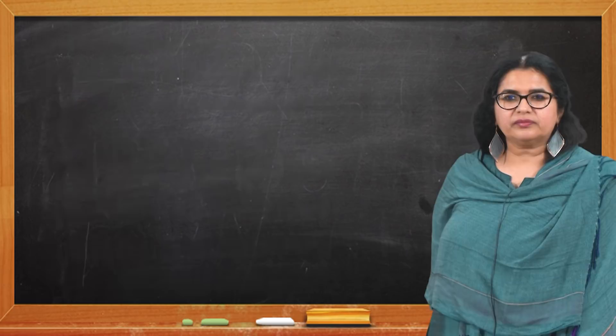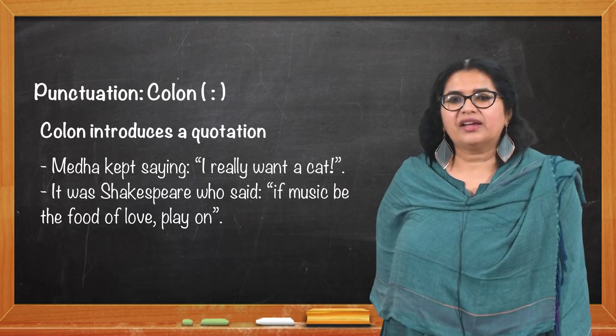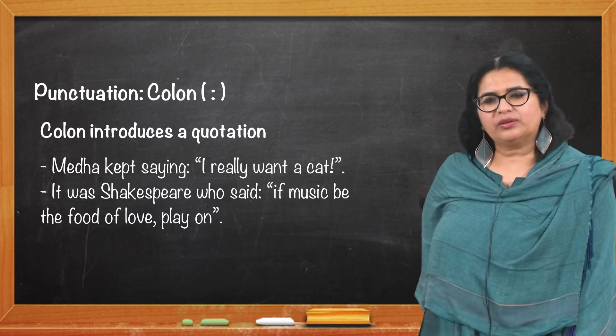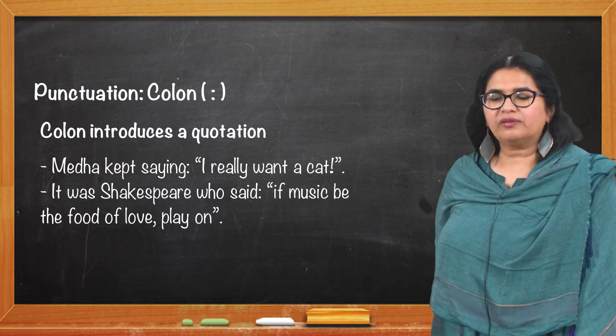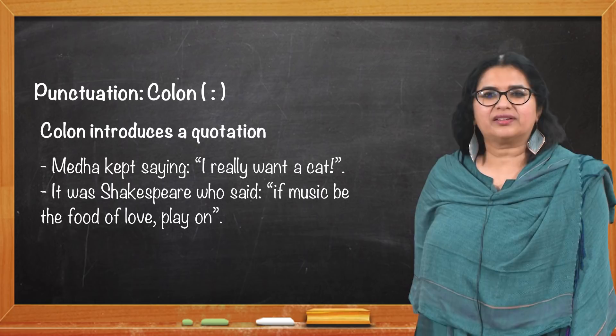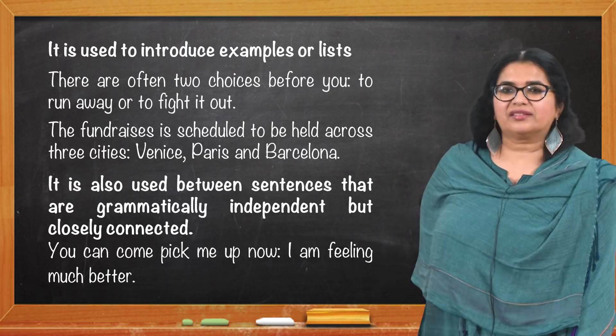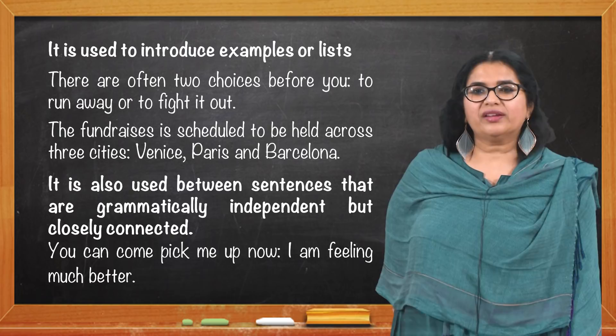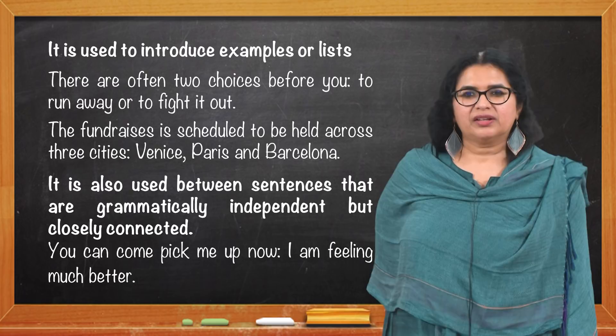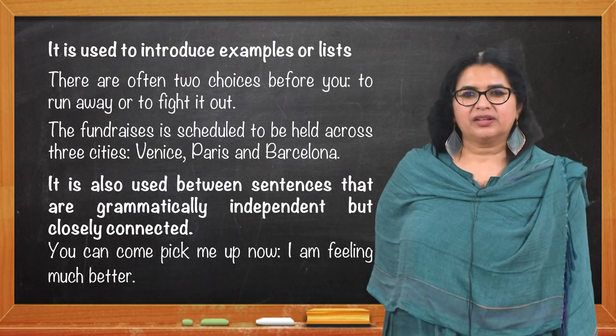A colon introduces a quotation — for example, 'Mega kept saying: I really want a cat.' It was Shakespeare who said: 'If music be the food of love, play on.' A colon is also used to indicate examples or lists: 'Read the following:' or 'There are often two choices before you: to run away or to fight it out.' 'The fundraiser is scheduled to be held across three cities: Venice, Paris, and Barcelona.' Colon is also used between grammatically independent but closely connected sentences: 'You can come pick me up now: I am feeling much better.'